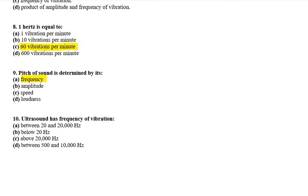Next is tenth. Ultrasound has frequency of vibration between 20 to 20,000 hertz, below 20 hertz, above 20,000 hertz, or between 500 and 10,000 hertz. The right option is above 20,000 hertz. If it is ultrasound, its frequency range is above 20,000 hertz.